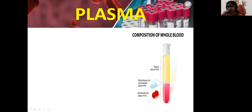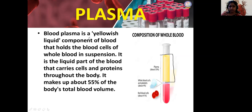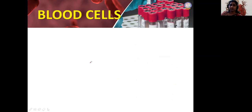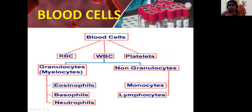Plasma is a somewhat straw-colored, yellowish liquid. It holds the blood cells — the formed elements — and is the liquid part of the blood that carries cells and proteins throughout the body. Its composition is 55% of blood. Next, we classify blood cells into three types: RBC, WBC, and platelets.